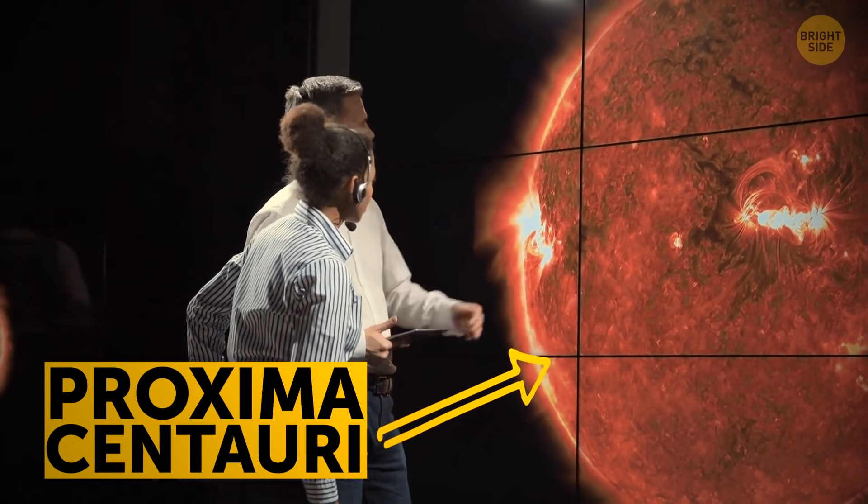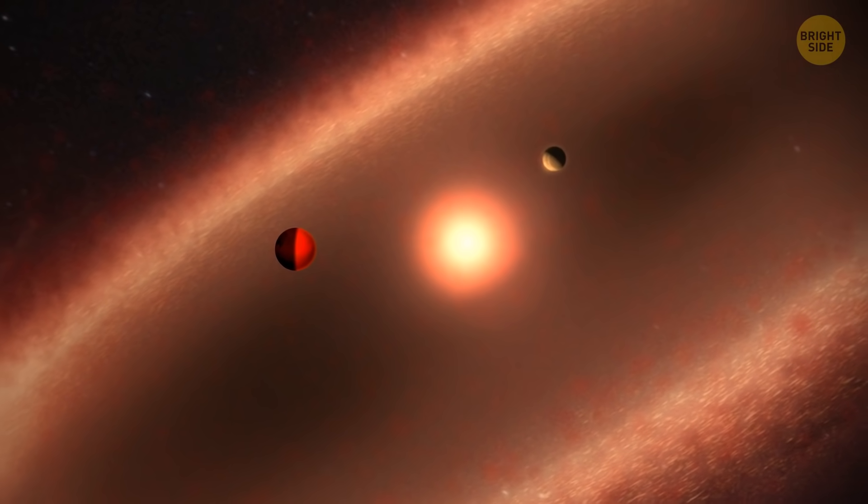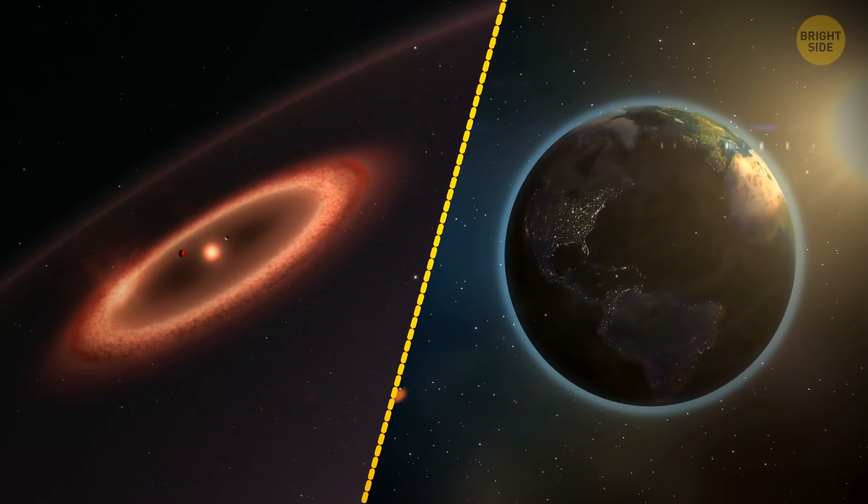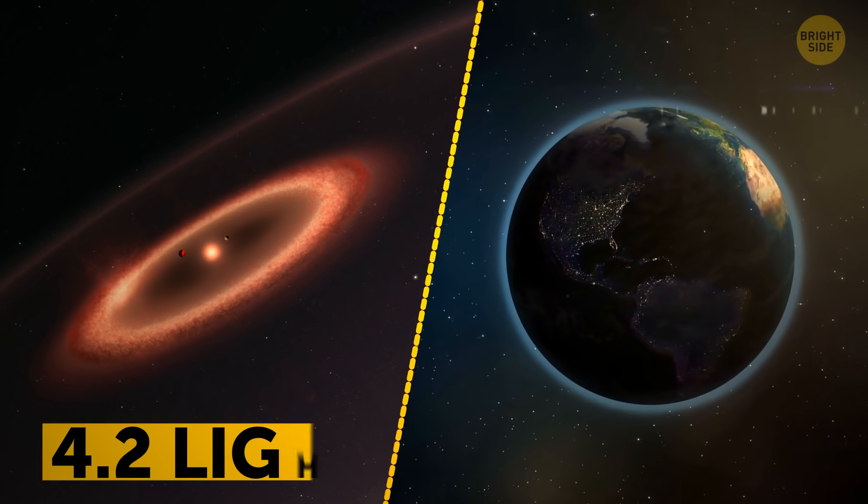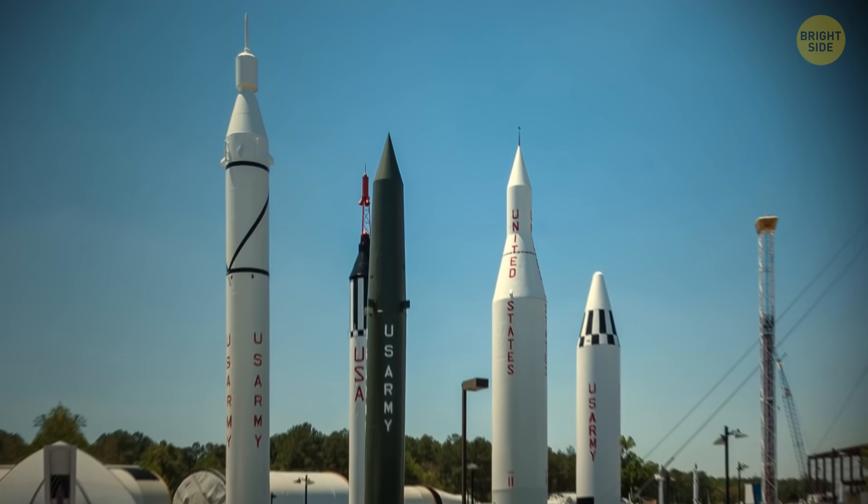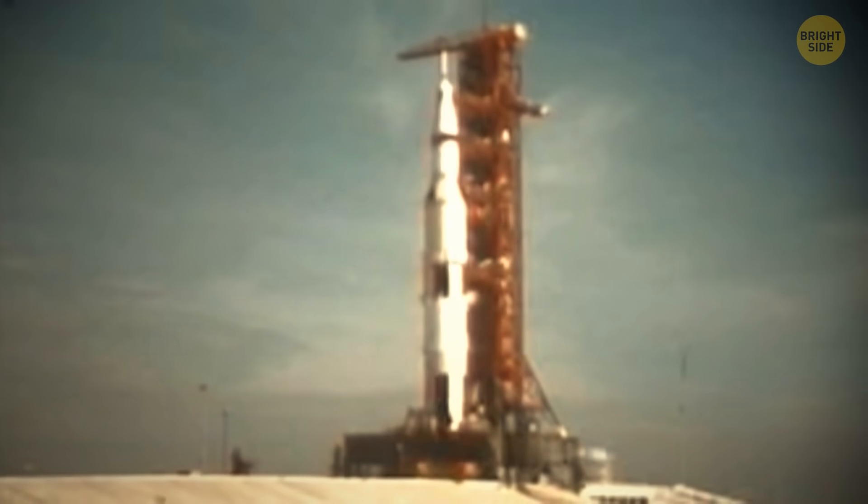It's Proxima Centauri. There are at least two planets around this red dwarf on which we can build our new home. But the problem is that this system is as far as 4.2 light-years away. So, we had to open our garage and choose a vehicle that could take us so far.